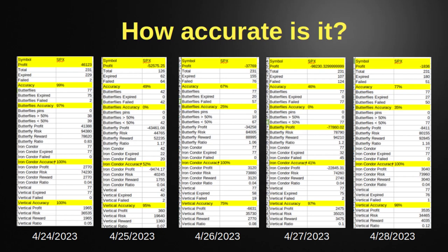Wednesday: 67% accurate overall — a wildly fluctuating day where price did a weird serpentine pattern. Butterflies were 25% accurate, iron condors 100%, verticals 75%. Thursday — another big news day — butterflies 0%, iron condors 41%, verticals 97%. Then Friday: overall accuracy 77%, butterflies 35%, iron condors 100%, verticals 98%.